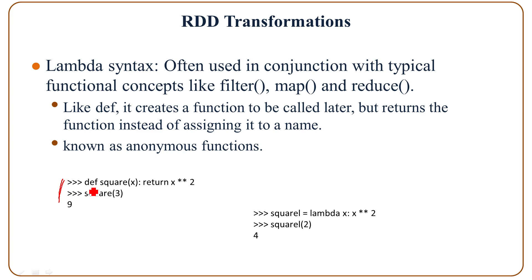The example on the left, we have the function square X and the function returns X squared. And later on we call the function and give it a three, then the function returns nine. The example on the right, here we use lambda syntax and it returns X squared. And later on we call square_l, square_l with the parameter 2, and square_l returns 4, which is 2 squared.